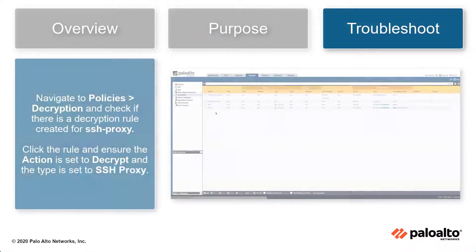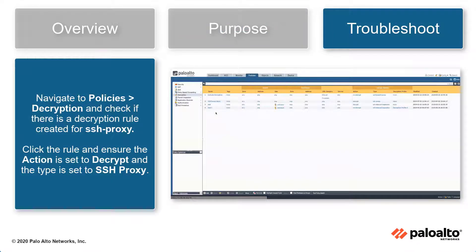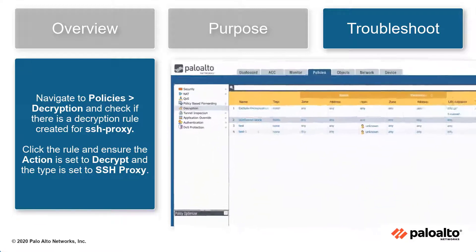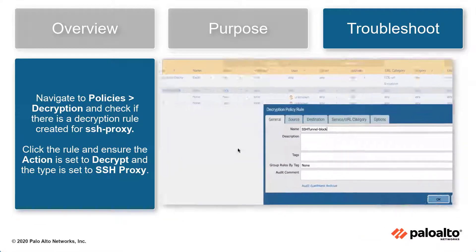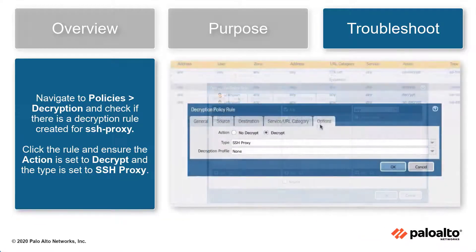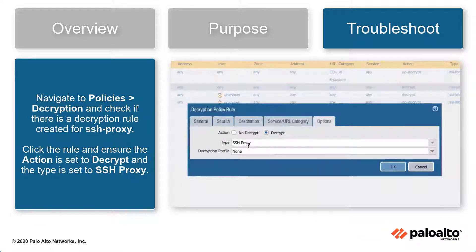Navigate to Policies, then Decryption, and check if there is a decryption rule created for SSH Proxy. Click the rule and ensure the action is set to decrypt and the type is set to SSH Proxy.